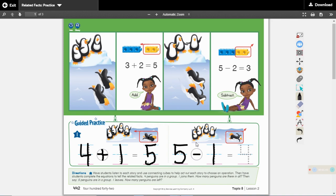And how many are we left with right here after we take him away? We are left with 4. So the problem for that is 5 minus 1 equals 4.